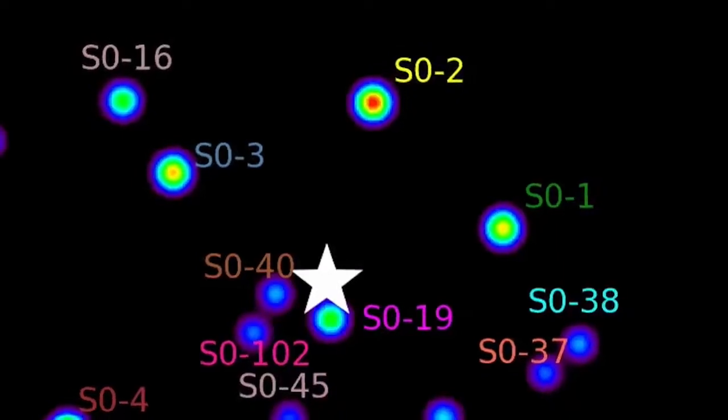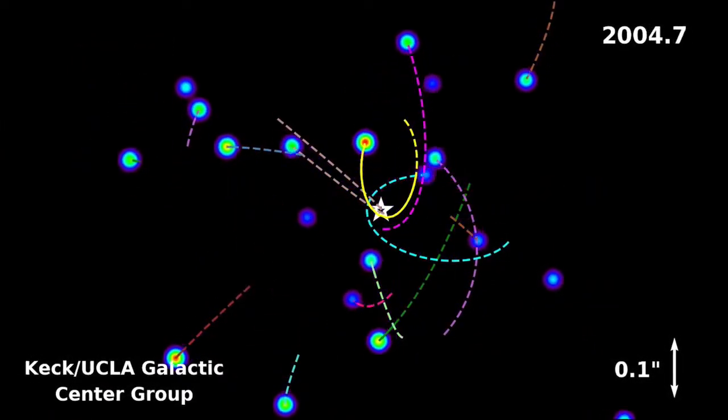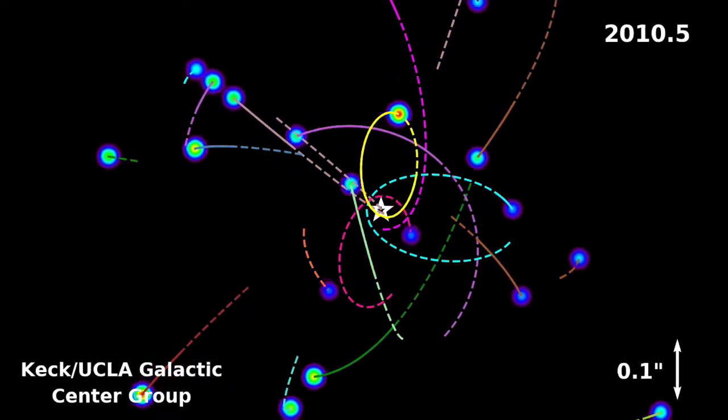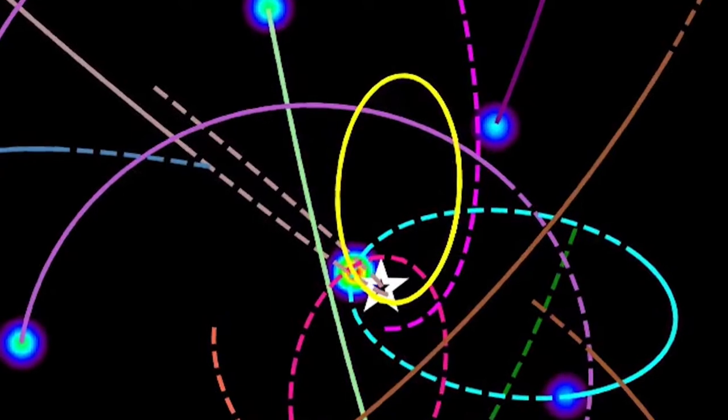My favorite star, its name is SO2, and it makes its journey every 16 years. We're at this point where it's closest to the black hole and is experiencing the strongest pull of gravity.